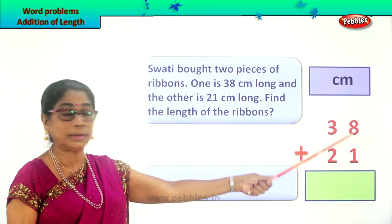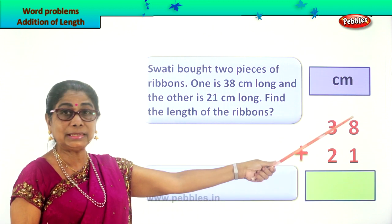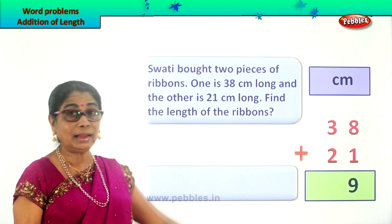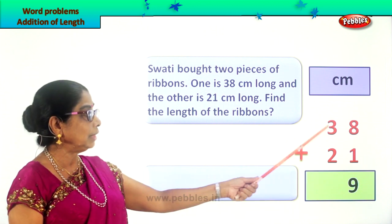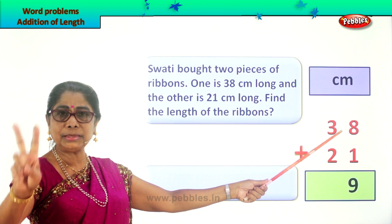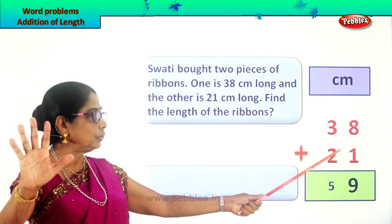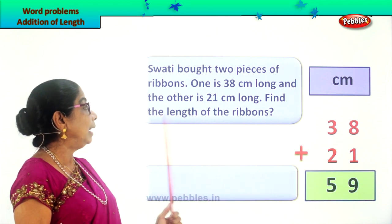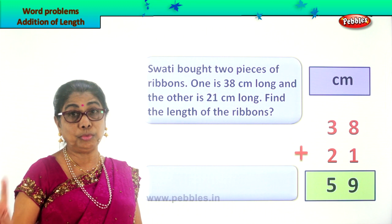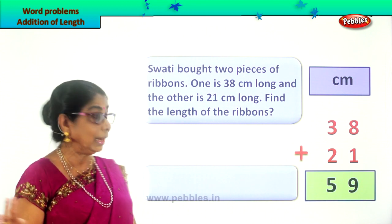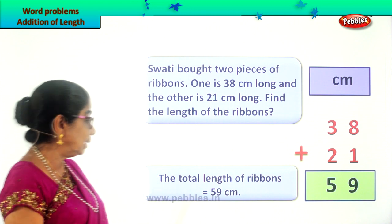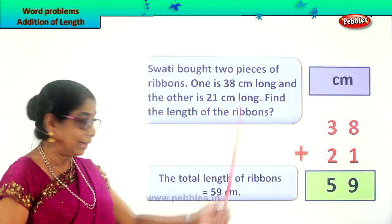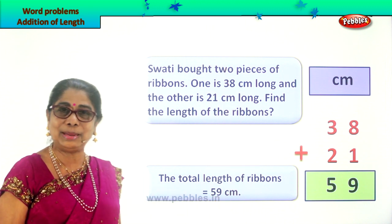Now let's do the addition. In the ones place, 8 plus 1. 8 and 1 is 9. Now 3 plus 2. 3 plus 2 is 5. So the length of the ribbon — we have 2 pieces of ribbon. The total length is 59 centimeters. The total length of ribbon that Swathi has is equal to 59 centimeters.